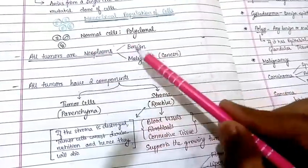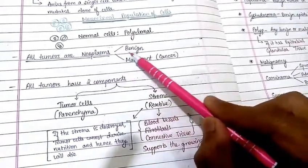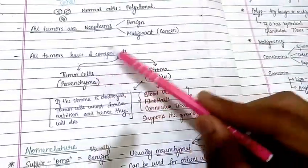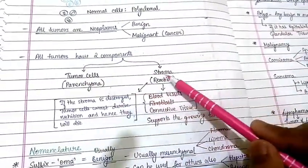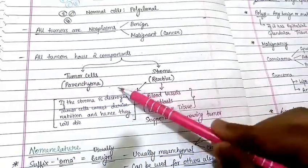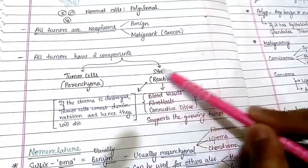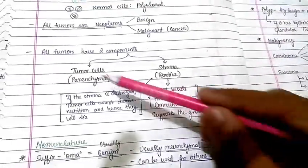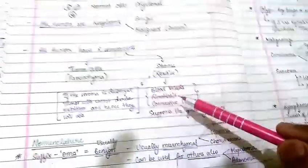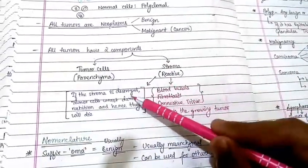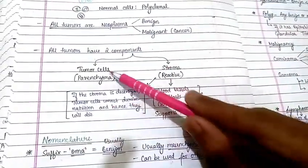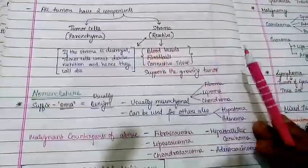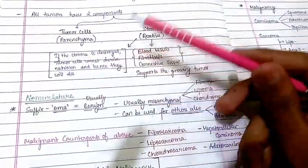All tumors are neoplasms — we use 'tumor' and 'neoplasm' as synonymous words. They are divided into two types: benign and malignant. Malignant is generally known as cancer. All tumors have two components: the tumor cell (parenchyma) and the stroma. Stroma consists of blood vessels, fibroblasts, and connective tissue, which support the growing tumor. If the stroma is destroyed, tumor cells cannot derive nutrition and will die.